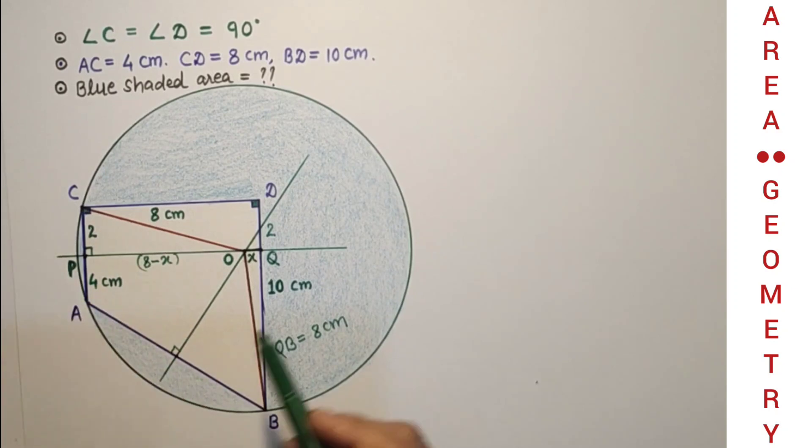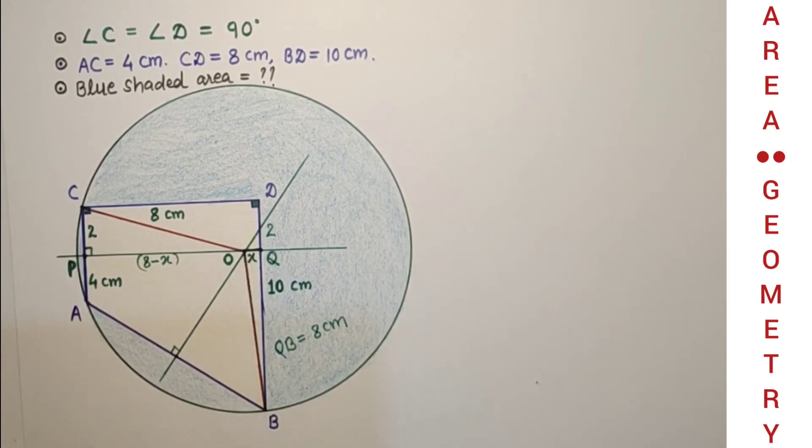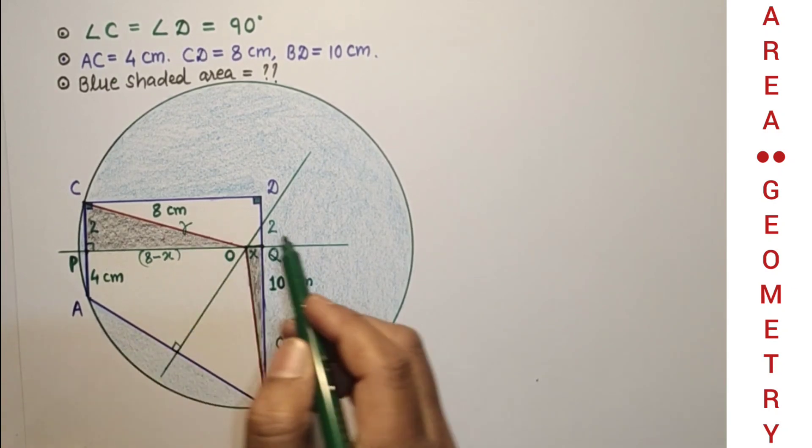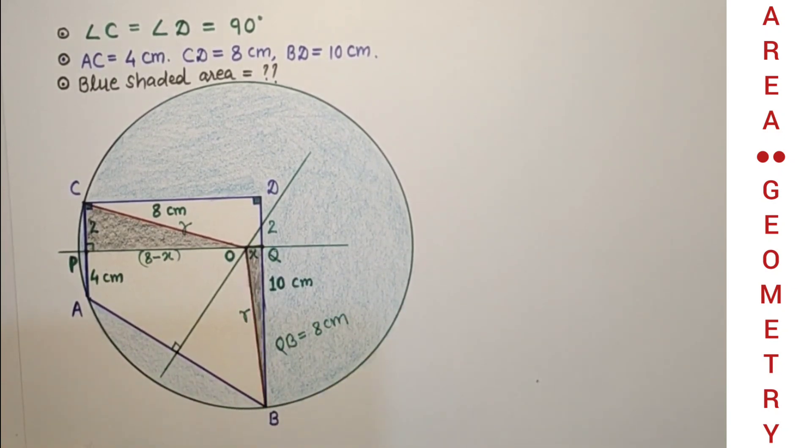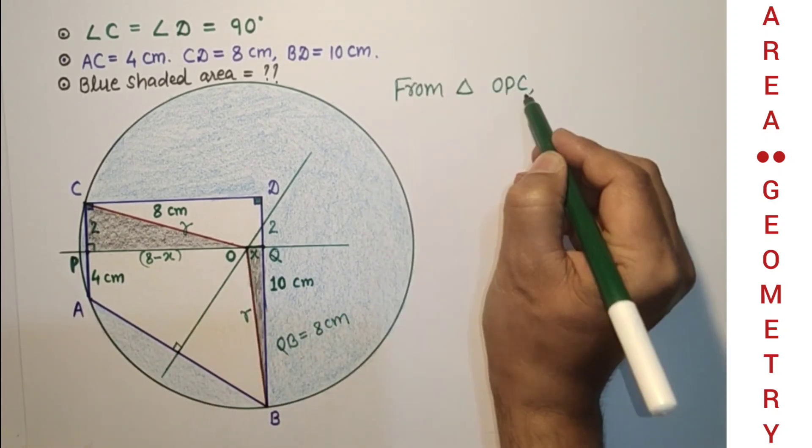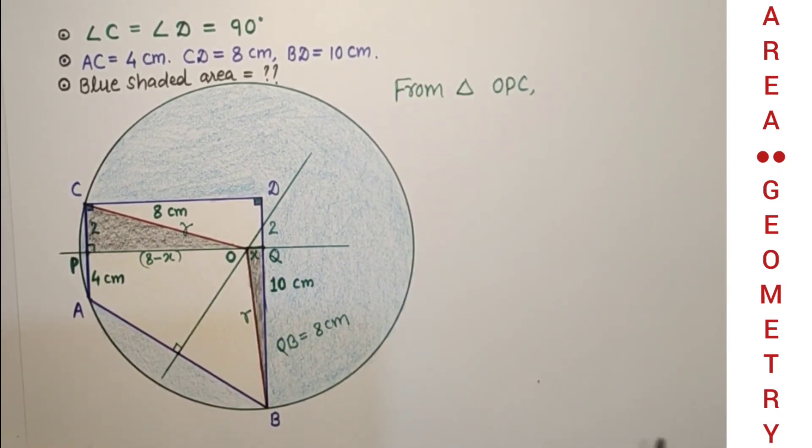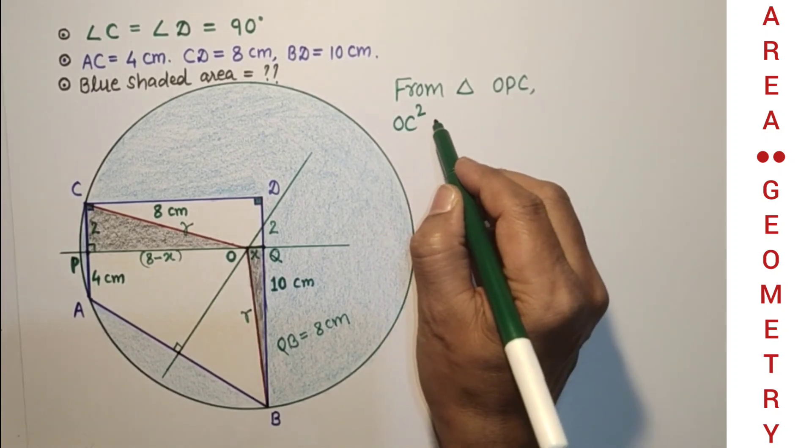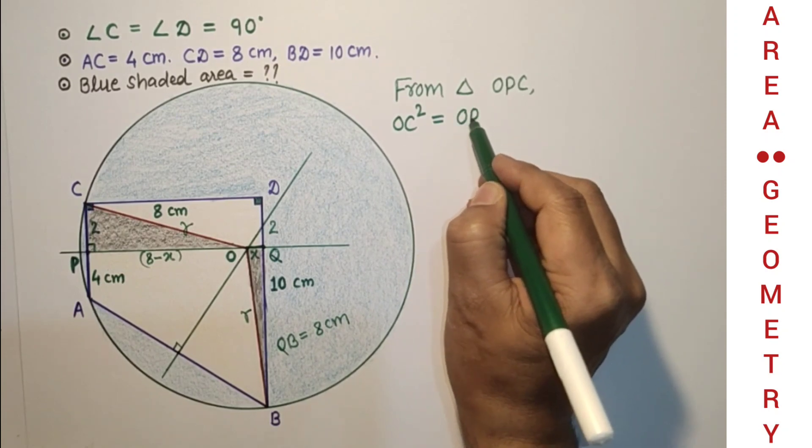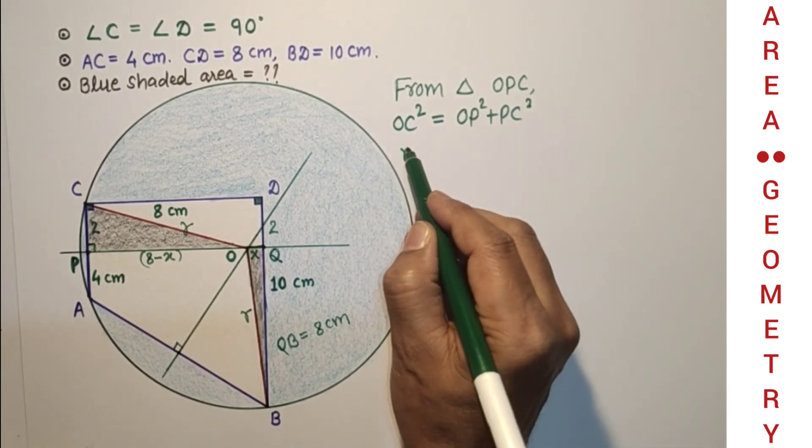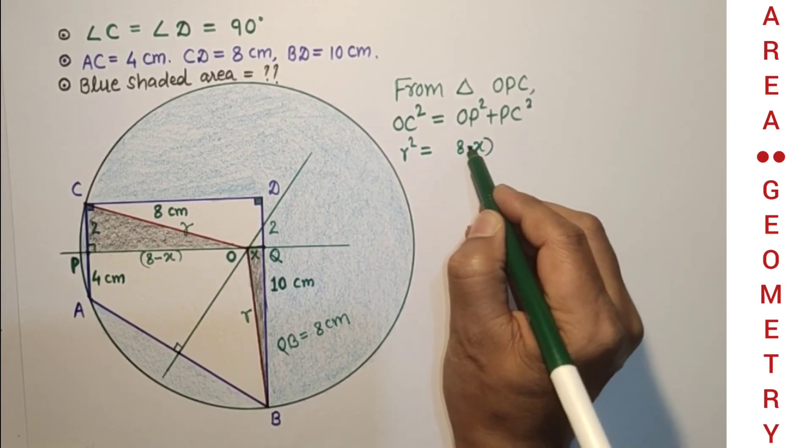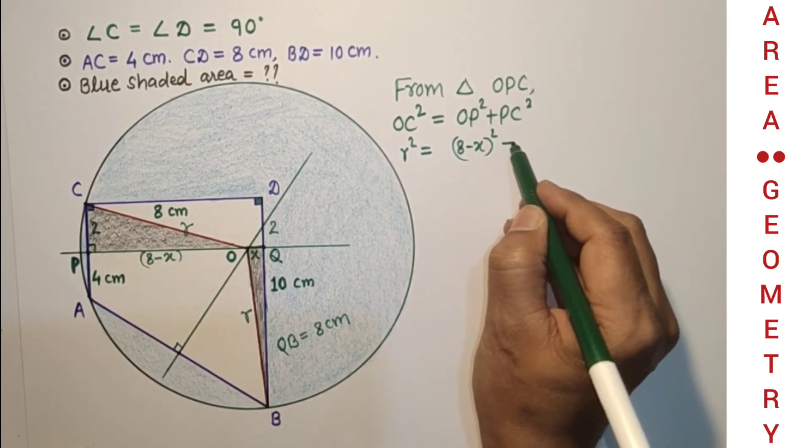This OC is R and this OB is R, radius of the circle. So from triangle OPC, by Pythagoras theorem, OC² is equal to OP² plus PC². This is R², and OP is 8 minus X, the whole square, plus 2 square.